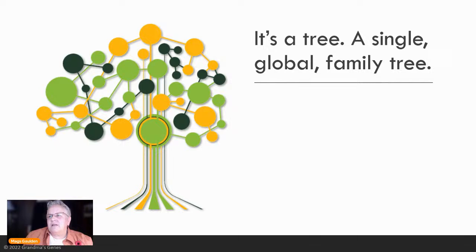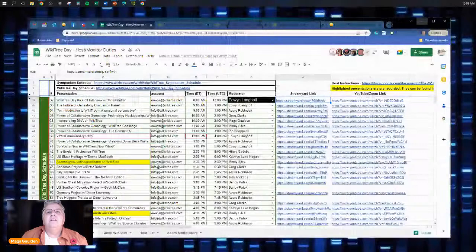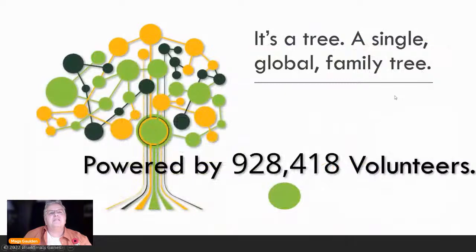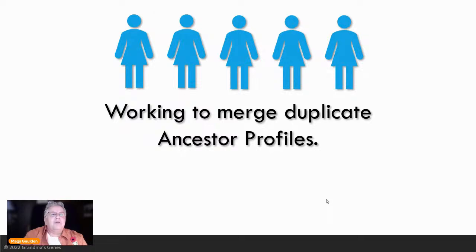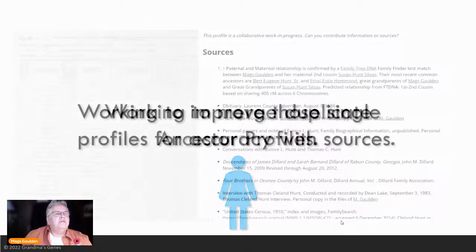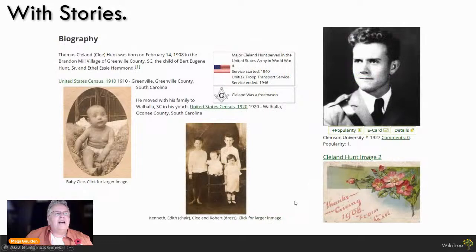WikiTree is a single global family tree powered by - well, the slide says 928,418 volunteers, but the current number is actually around 950,717. We all work together collaboratively to merge duplicate profiles, so we would all be working on the same ancestor if we shared that ancestor's profile, and we work to improve those single profiles for accuracy with sources. WikiTree actively works to make sure that the tree is healthy and accurate.